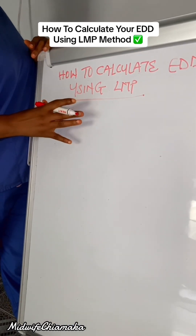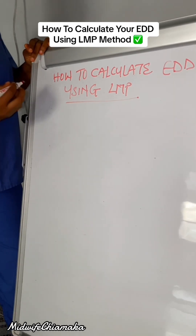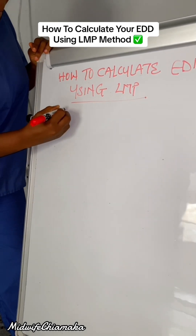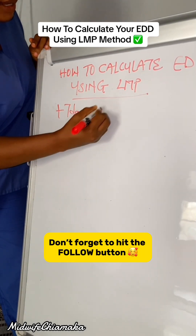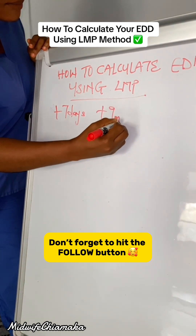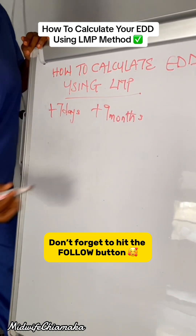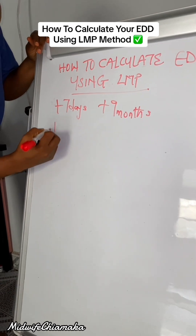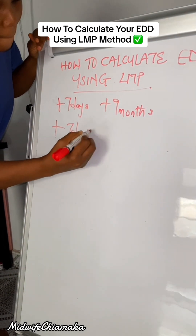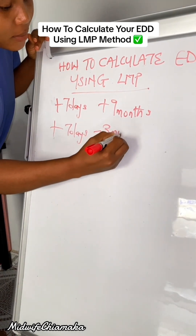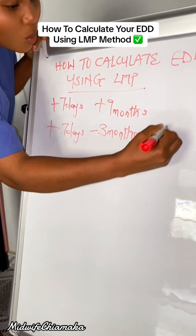There are two formulas we can use to achieve this calculation. The first one is plus seven days and plus nine months. The second formula is plus seven days, minus three months, and plus one year.